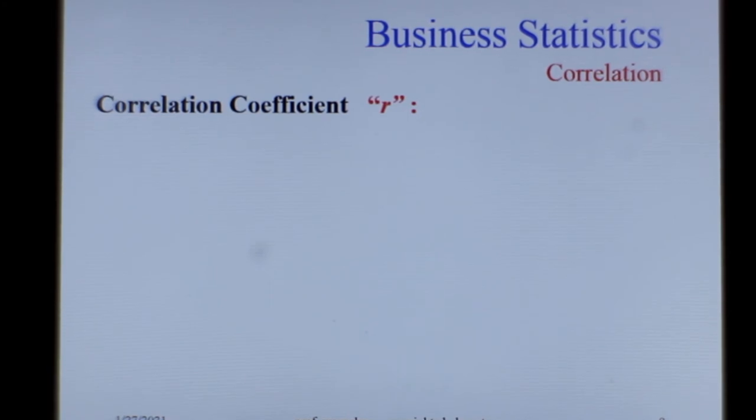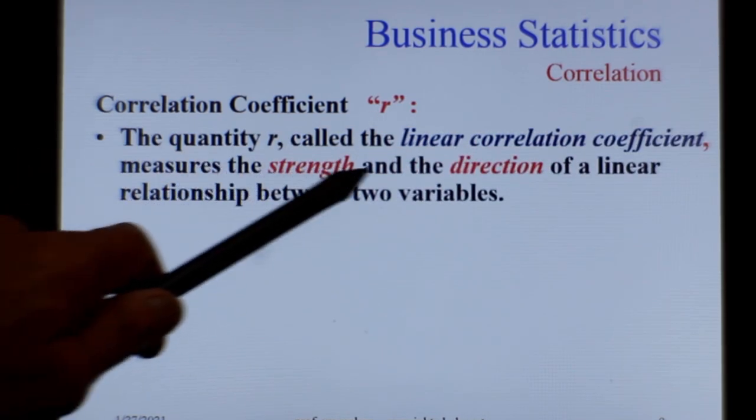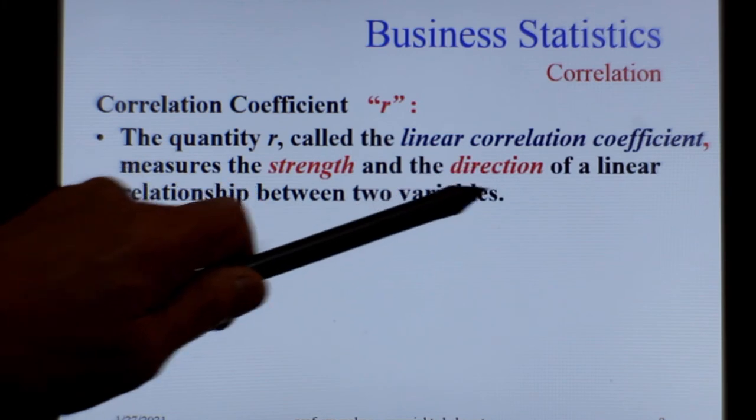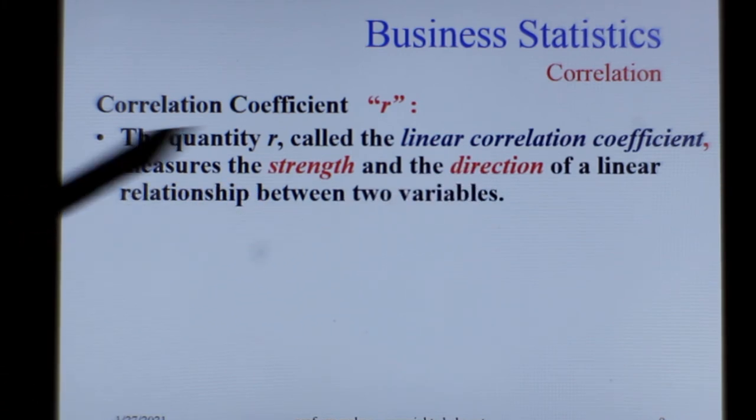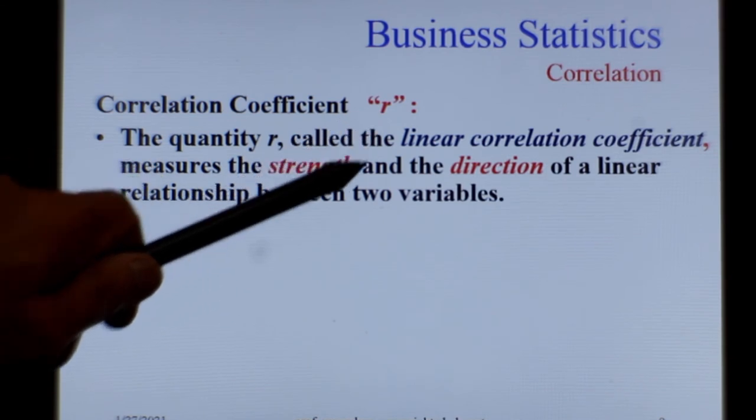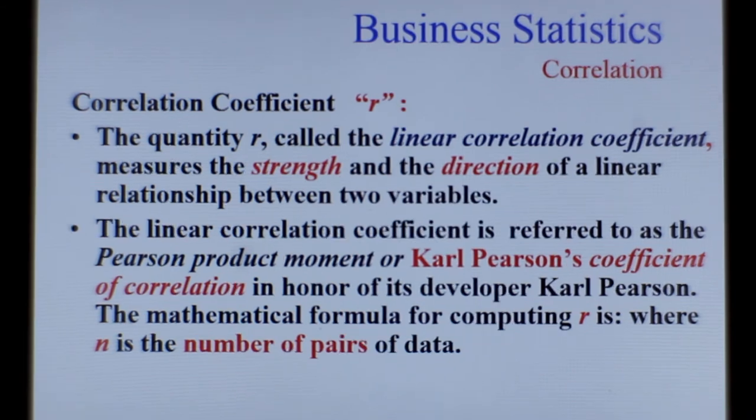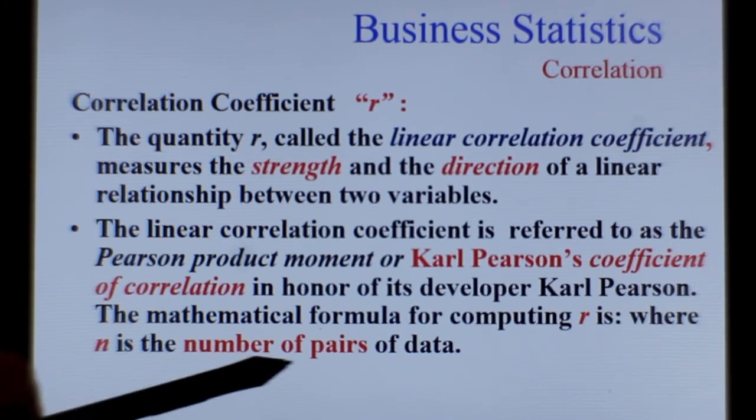Now let us understand how to measure correlation. The measure of correlation is indicated by correlation coefficient, or it is also known as small r. The quantity r is called the linear correlation coefficient, measuring the strength and the direction of the linear relationship between two variables. If it is plus, then it will be positive correlation. If it is minus r, it will be negative correlation. This is called Carl Pearson coefficient of correlation in honor of the developer, where n is the number of pairs of data.